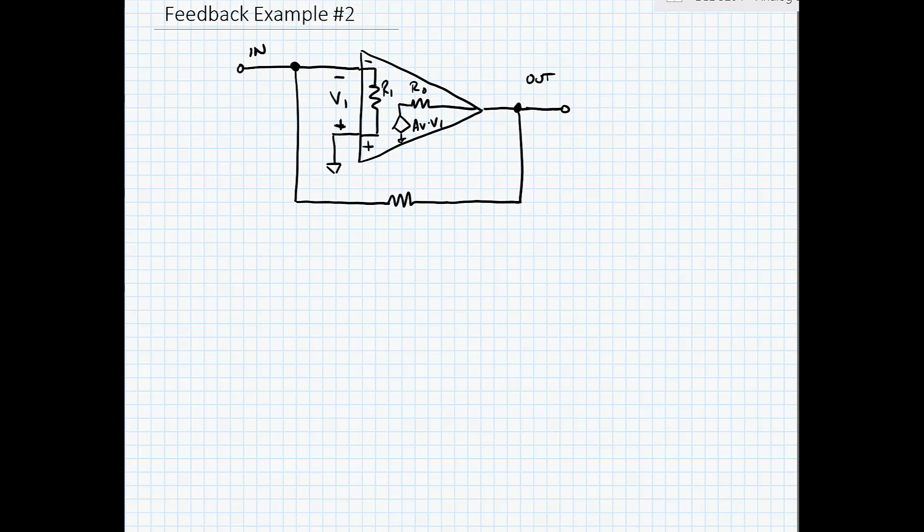Now we need to check to see what the connections are. So at the input I can go either through the amplifier to complete the circuit or I can go through the feedback network. So this is a shunt connection at the input.